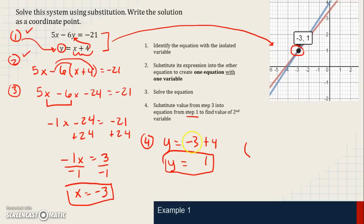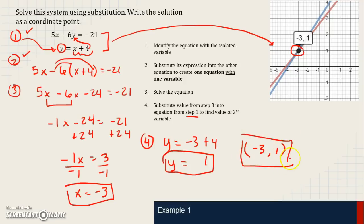Think of it this way: if I owe 3 dollars but have 4, I have enough to cover the debt and have 1 left over — so it's positive 1. Writing this as a coordinate point, we have negative 3 comma 1, and that is how we solve using substitution.